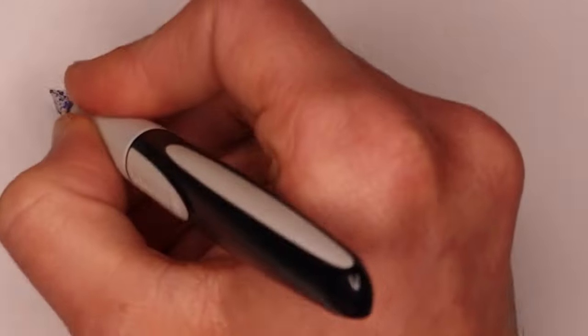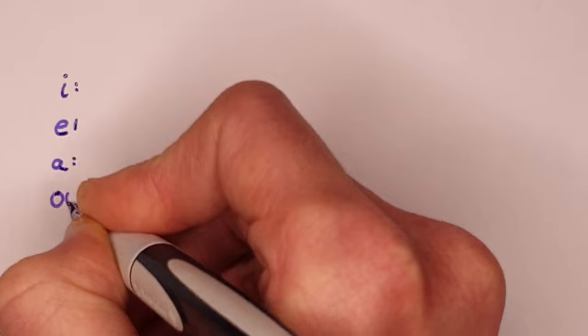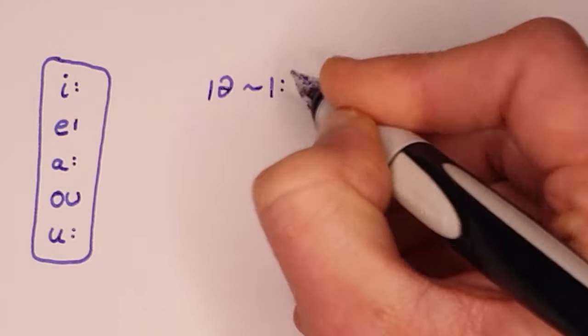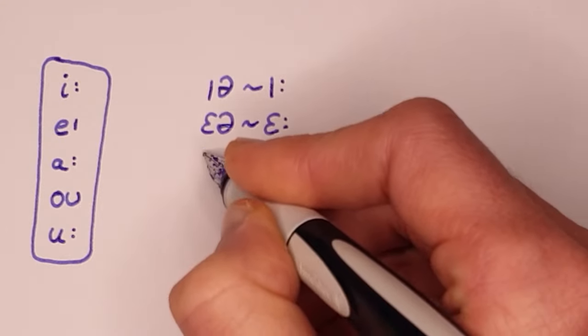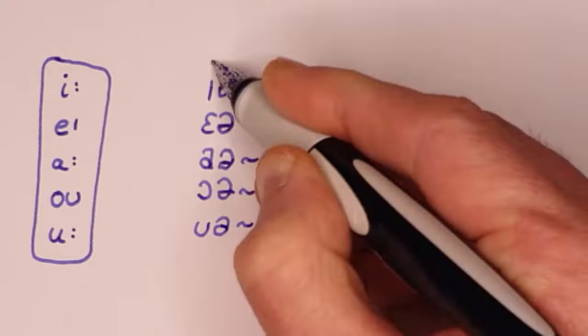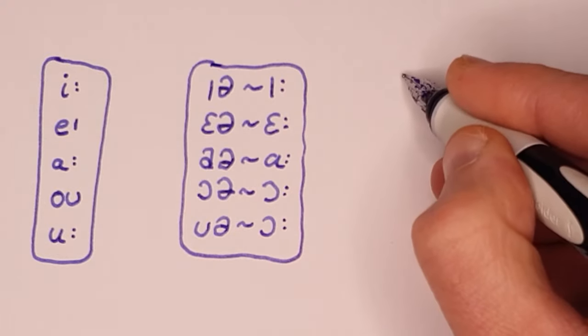And so my mental cheat sheet for this hopefully more accessible version of RP boils down to this vowel system, where I keep older pronunciations like force and cure in case I need to keep force and cure separate from thought